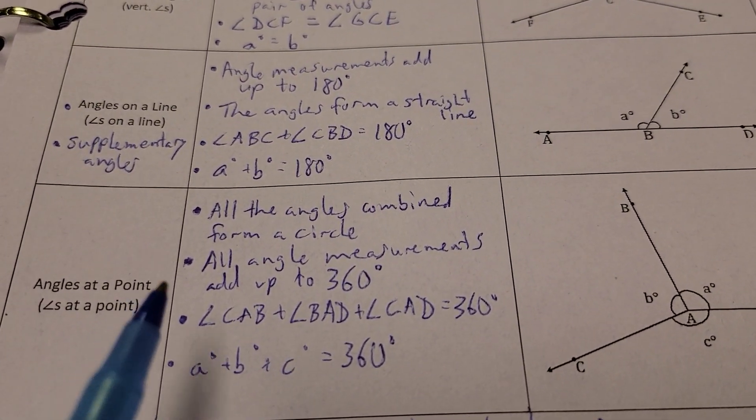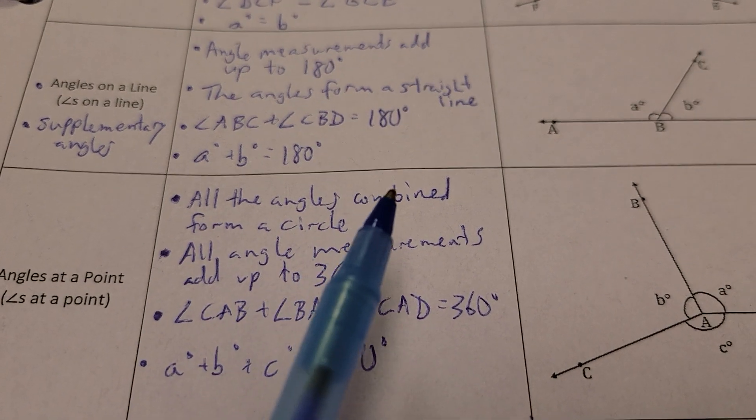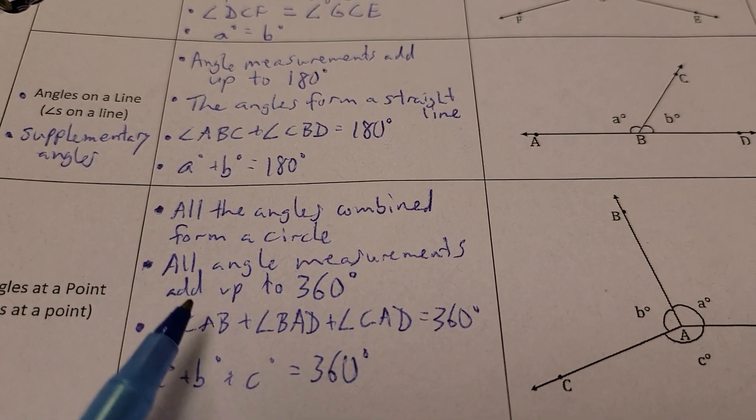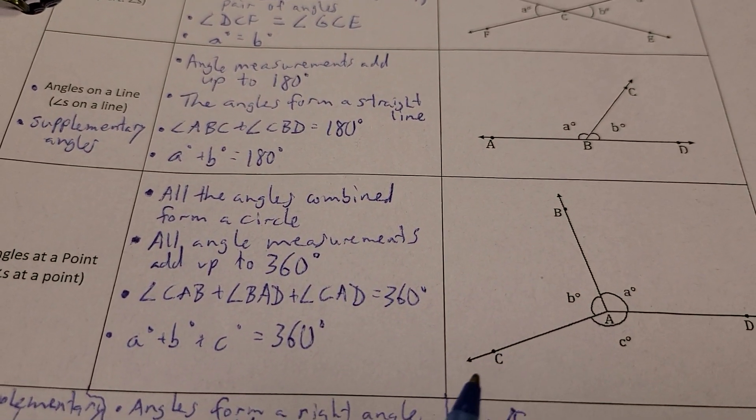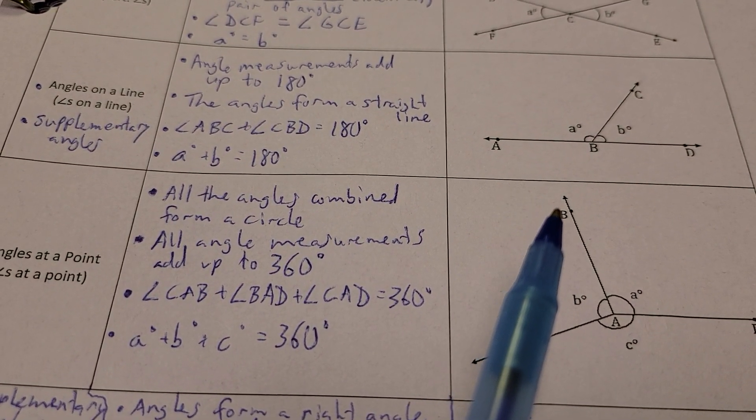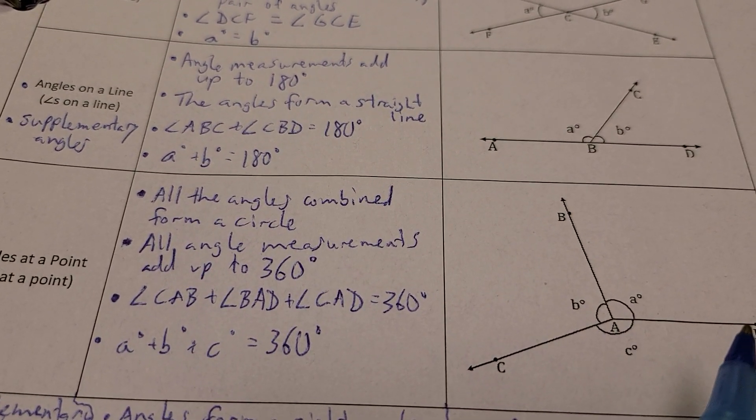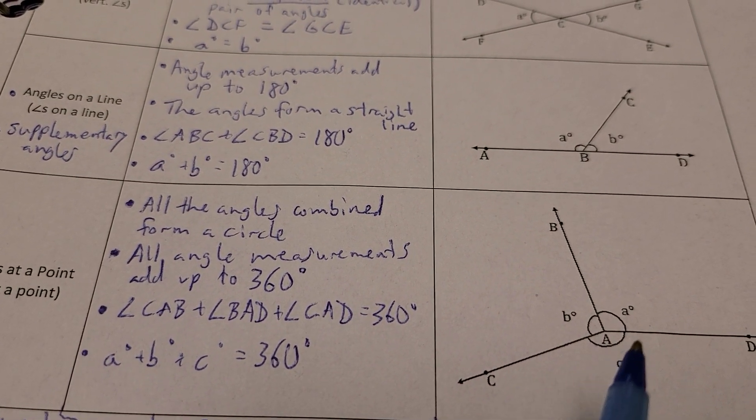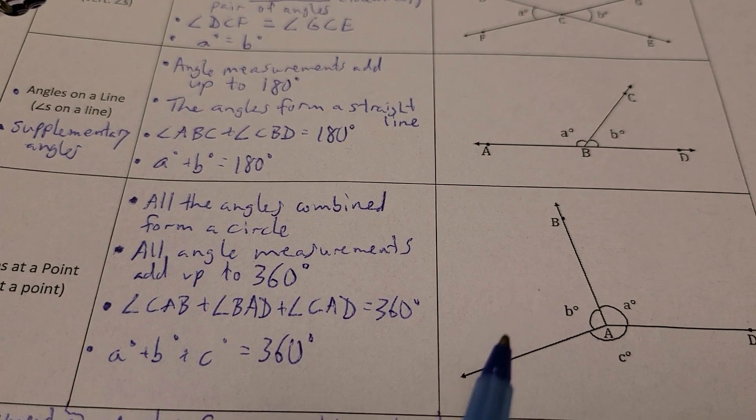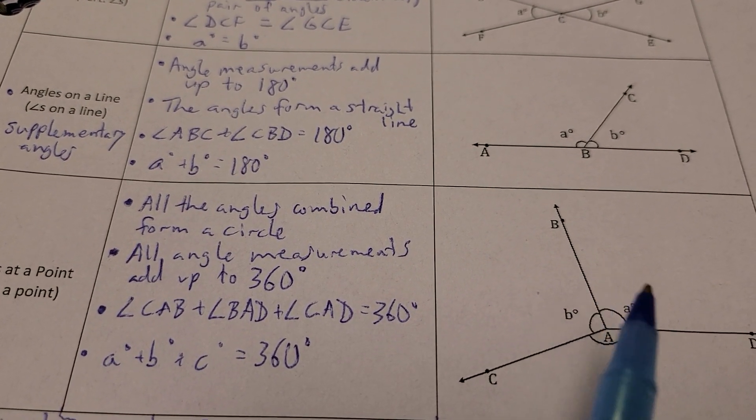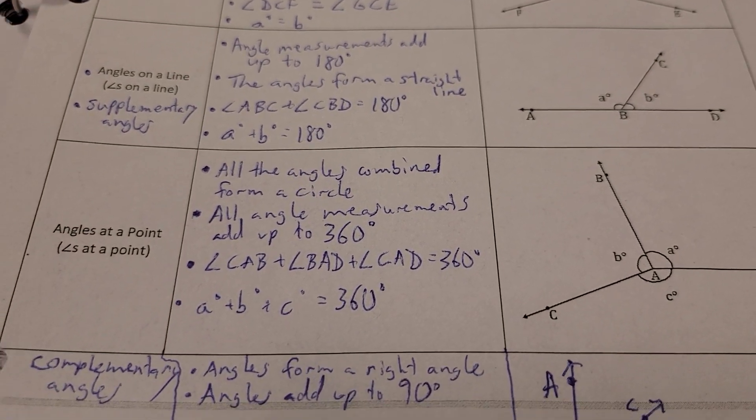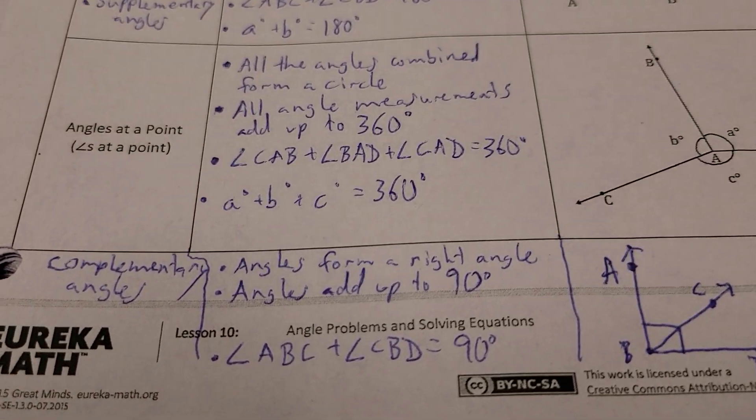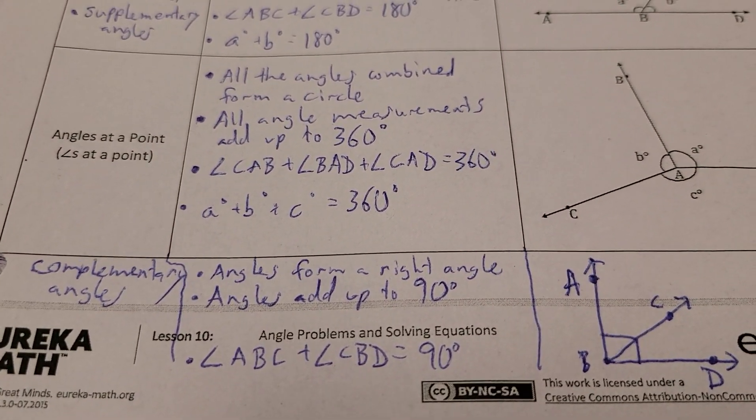Next up, angles at a point. All the angles combined form a circle. They essentially wrap all the way around. All angle measurements add up to 360 degrees. So, in this picture, angle CAB, angle BAD, and angle CAD. All three of the angles, this angle, this angle, and this angle, all add up to 360 degrees.